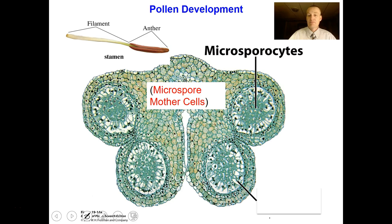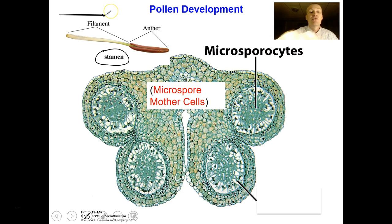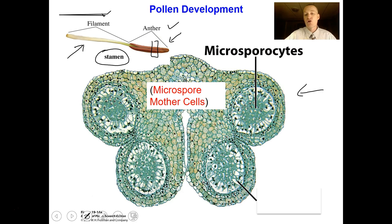Now I want to show you pictures of what I just talked about in that life cycle, starting with the male part. The male part is called the stamen, which is composed of the filament and the anther. The filament is the stalk that holds the anther up. The anther is the portion that has cells which will undergo meiosis to produce the microspores. If you were to section an anther and look at it through a microscope, this might be what it looks like.